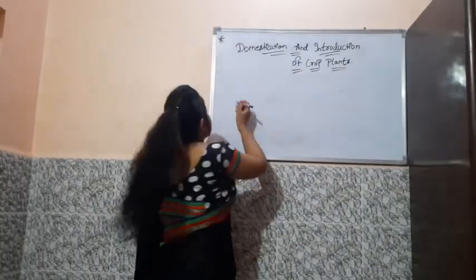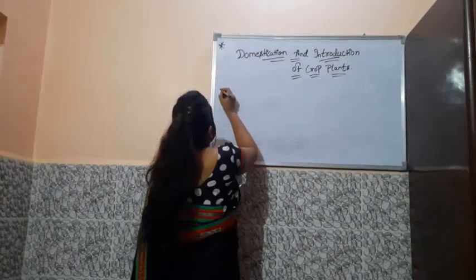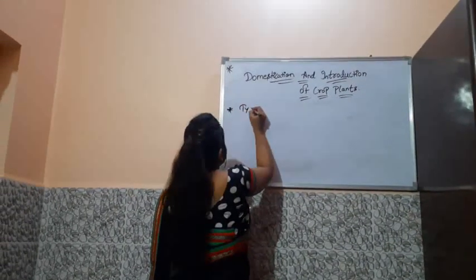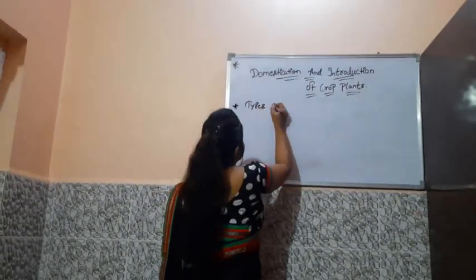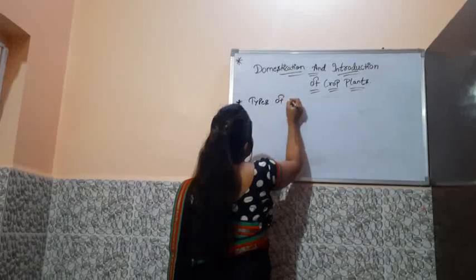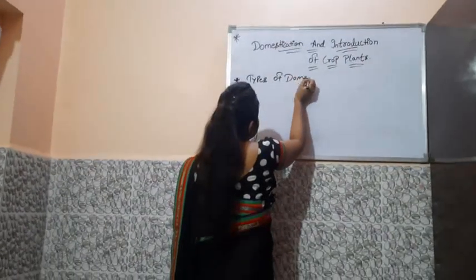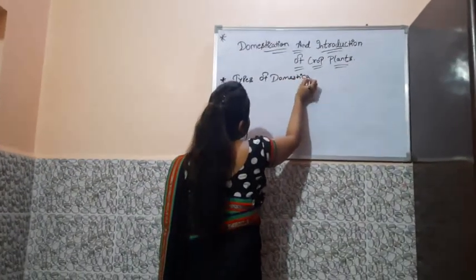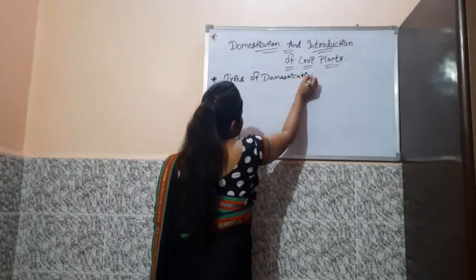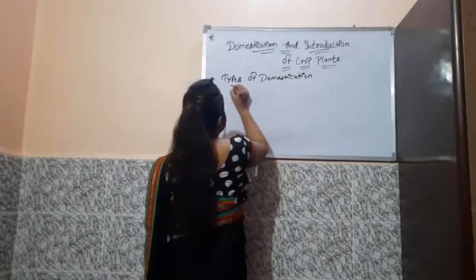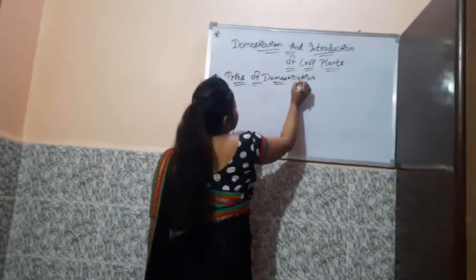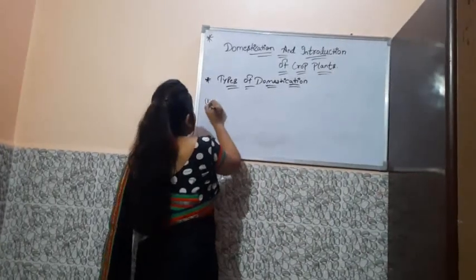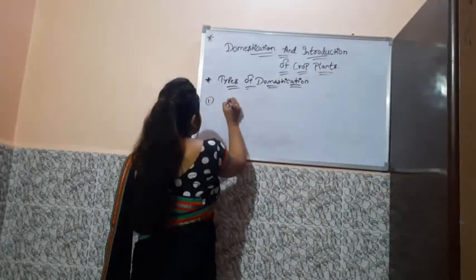Next is Types of Domestication. Paaltu banane ke prakar. First hai haemara, inseganta.